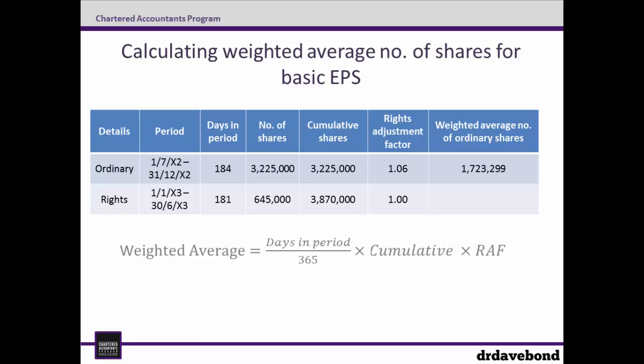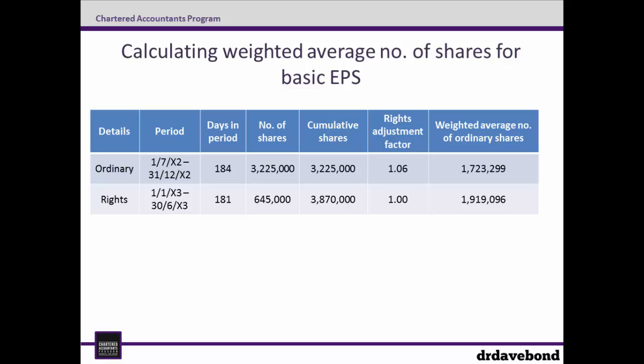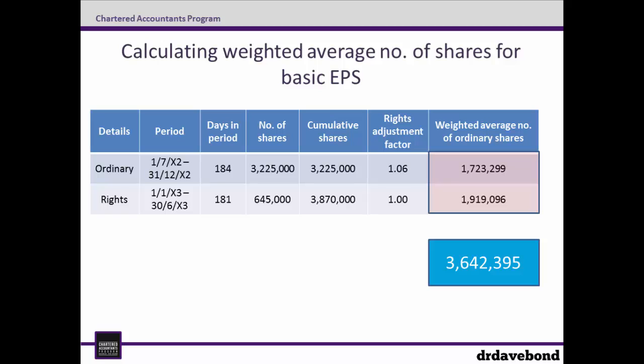This process is then repeated for the shares issued due to the exercise of the rights, with the exception that we don't have to calculate the rights adjustment factor — we assume it's 1. In this case, 181 divided by 365, multiplied by 3,870,000, yields 1,919,096. Adding the weighted average amounts together, we end up with 3,642,395.